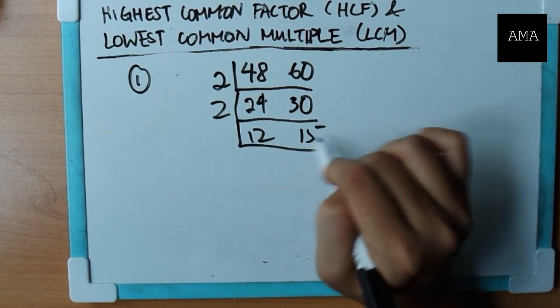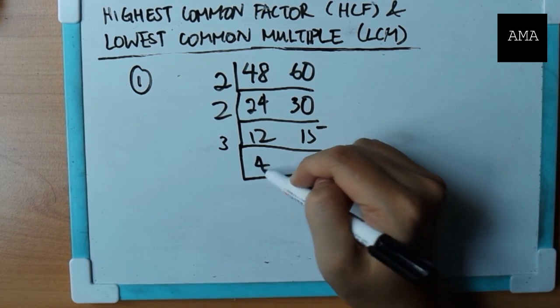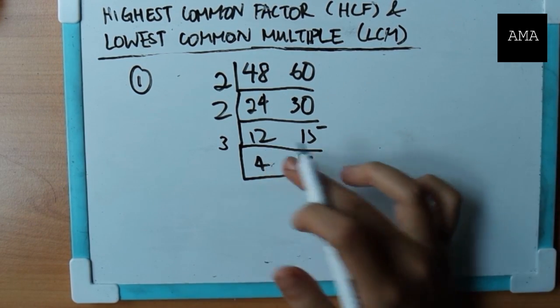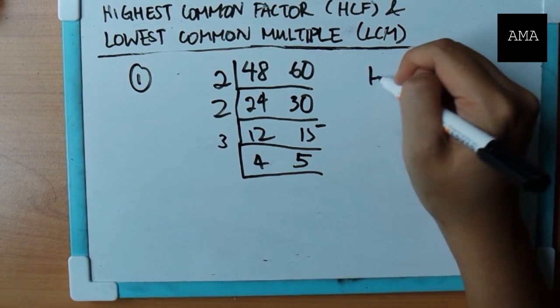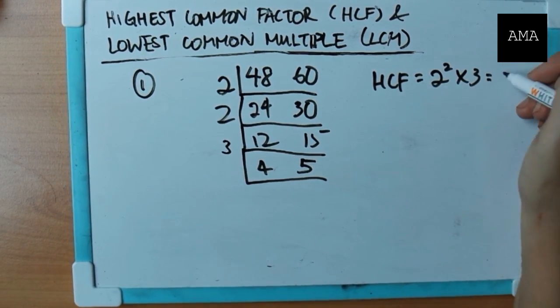So here, you can't divide by two any further, but you can divide by three. Get four and five. So at this stage, I can no longer divide by any number. My HCF is simply two squared times three, which is twelve.